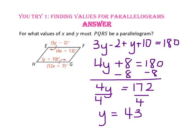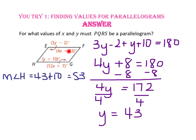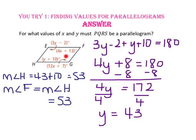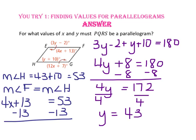Divide both sides by 4 and Y equals 43. Now we find X. The measure of angle H is Y plus 10, and since Y is 43, angle H measures 53. Opposite angles in a parallelogram are congruent, so angle F also equals 53. Since angle F is 4X plus 13, we write 4X plus 13 equals 53. Subtract 13 from both sides, divide by 4, and X equals 10. So X equals 10 and Y equals 43.